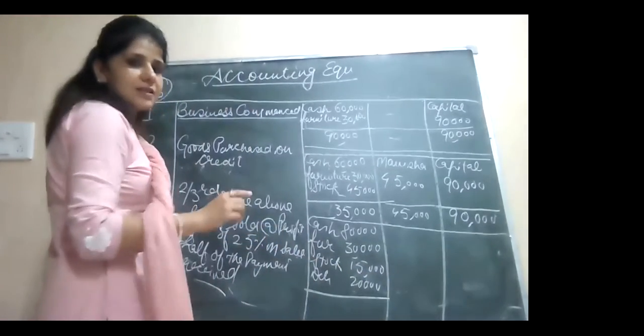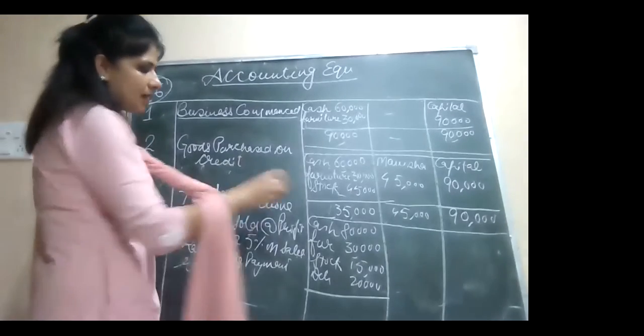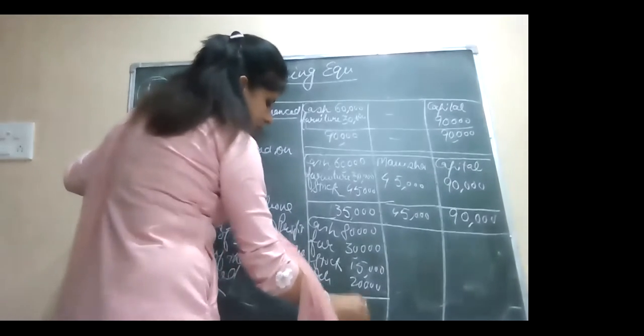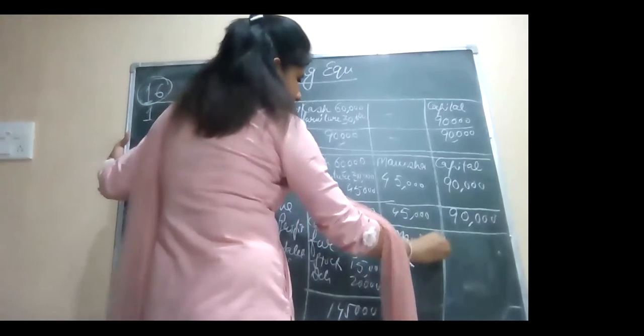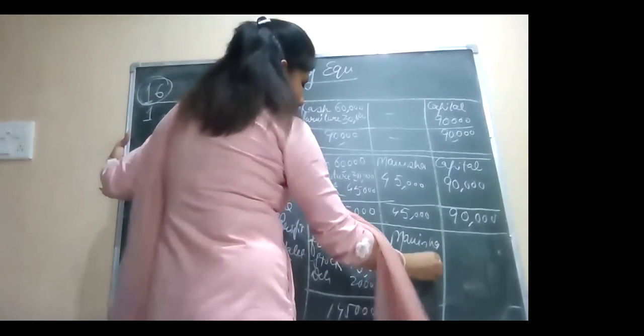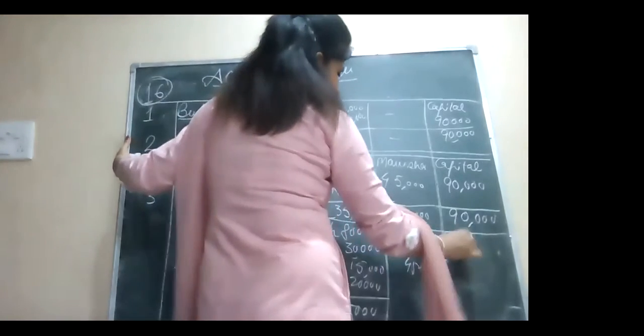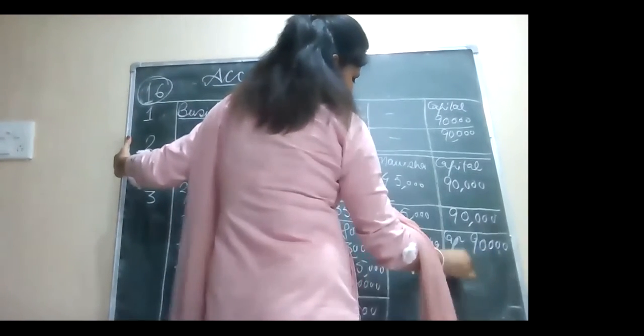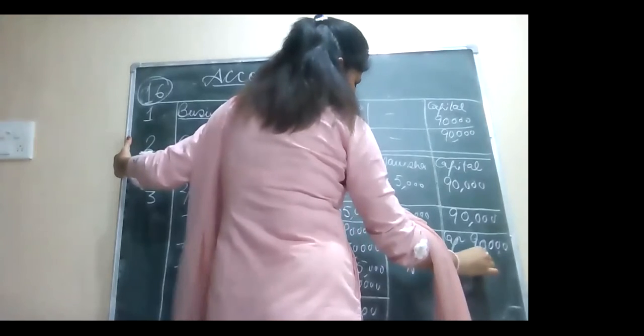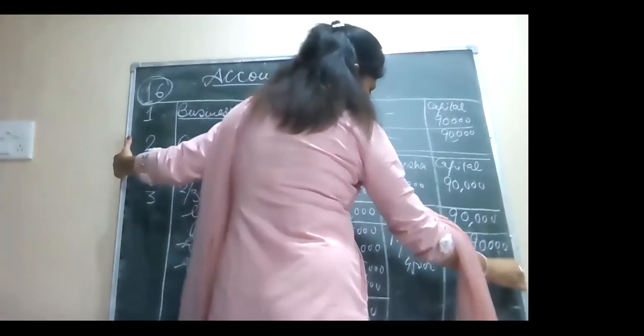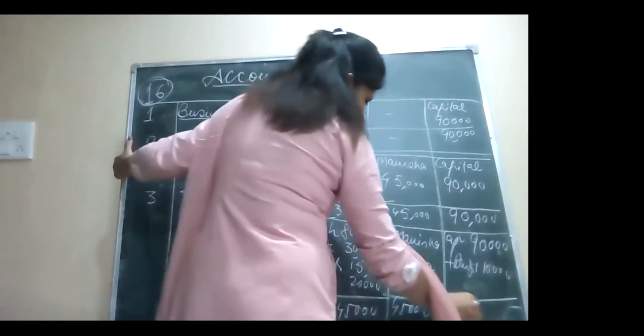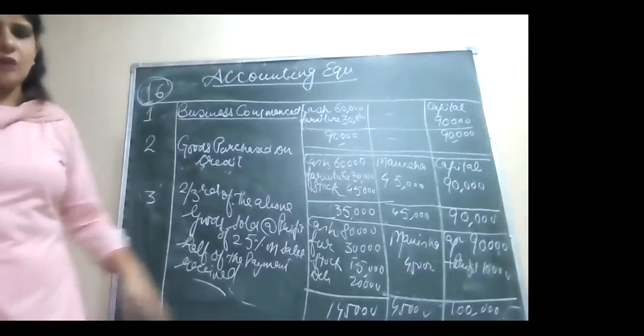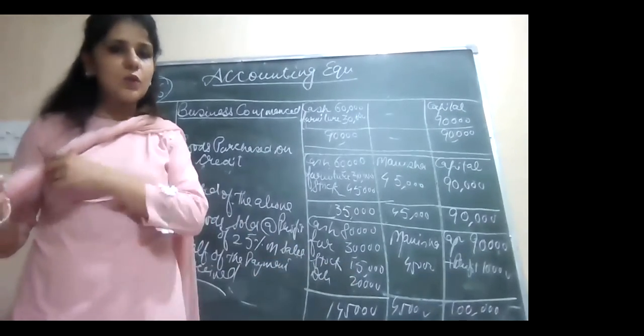Manisha, our creditors are 45,000. Let's record the cash for the profit. 90,000 plus 10,000 is 100,000. Done. 1 lakh 45 minus 45 is equal to 1 lakh. Again your equation gets matched.